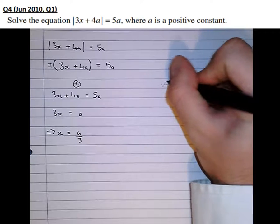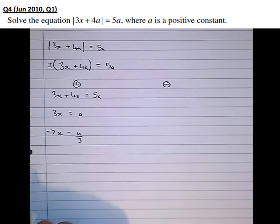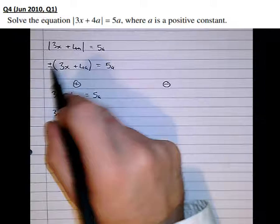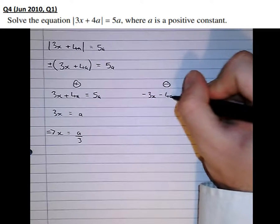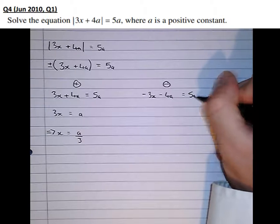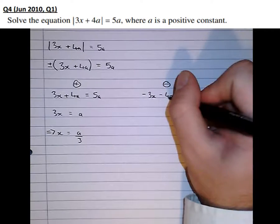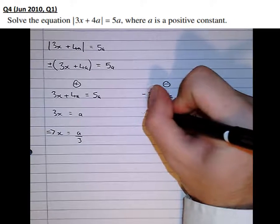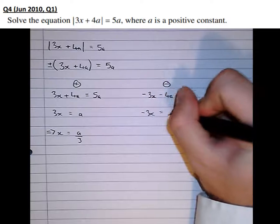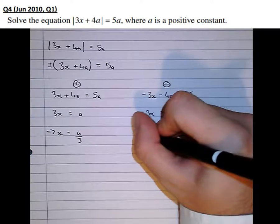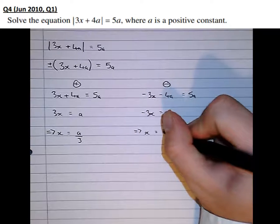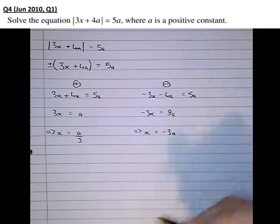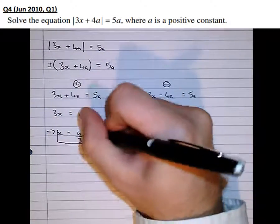Let's try the negative case now. So if that's negative, that gives us negative 3x minus 4a equals 5a. Taking the 4a over to the other side, negative 3x equals 9a. And that means that x equals, so 9 divided by minus 3 is minus 3a. So there's our two answers.